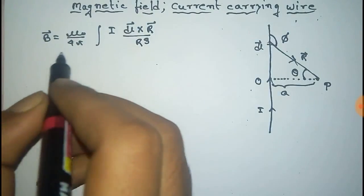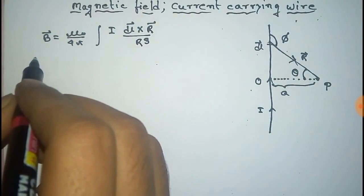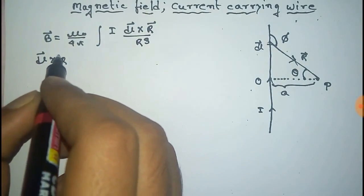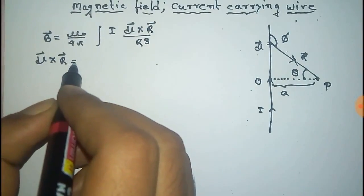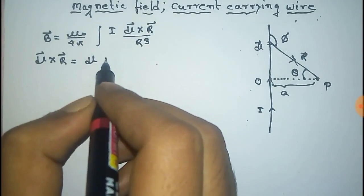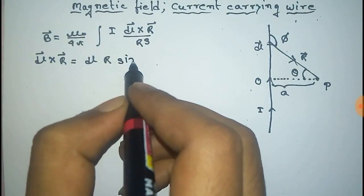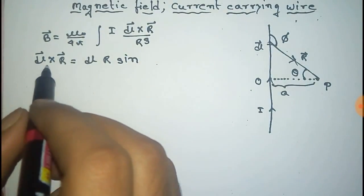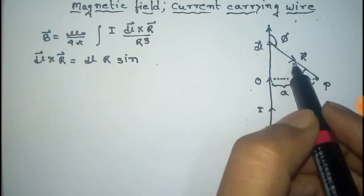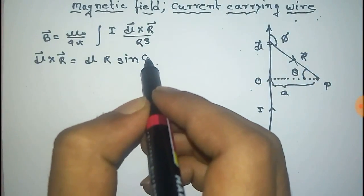The value of dL cross R vector equals dL into R into sin(phi), because phi is the angle between dL and R. The angle between dL and R is equal to phi, so we use sin(phi).